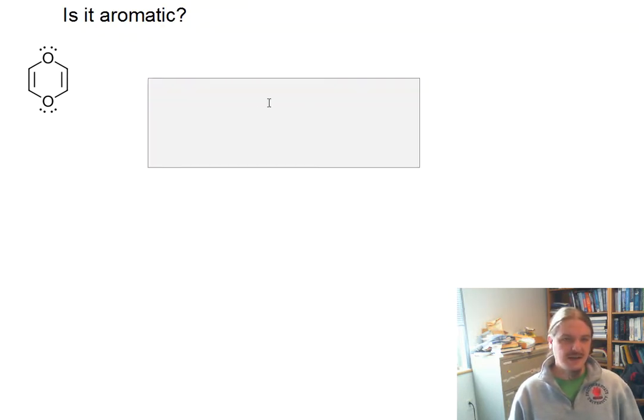So it turns out that we have some rules that we need to follow to determine whether something's aromatic. First, it's important that we have a molecule that's cyclic. If it's not cyclic, it's not aromatic. Two, it needs to appear to be conjugated, so there needs to be the appearance of something in a P orbital all the way around. And three, it needs to be planar. Non-planar molecules can't be conjugated, so that kind of goes hand-in-hand with number two.